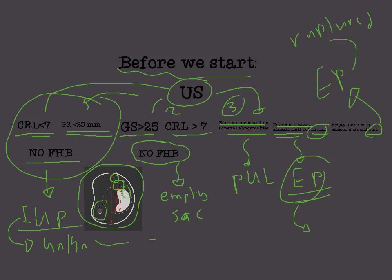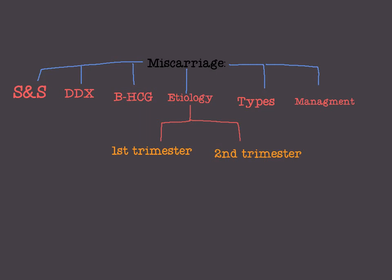So now we know some key concepts: crown-rump length, gestational sac, intrauterine pregnancy of unknown viability, empty sac — when there is no fetal heartbeat with a gestational sac more than 25 mm and crown-rump length more than 7 mm — pregnancy of unknown location, ectopic pregnancy, and ruptured ectopic pregnancy.